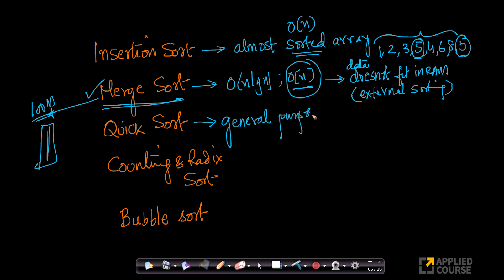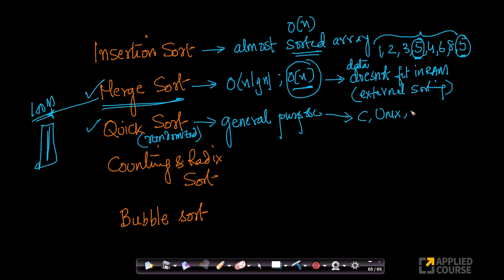Quick sort is a very good general-purpose sorting algorithm, especially the randomized variant, because it helps you avoid the worst case of O(n²). Quick sort is a nice general-purpose choice — people used it in C, Unix, and earlier versions of Java. It was one of the most popular algorithms, though it has since been replaced in some implementations.